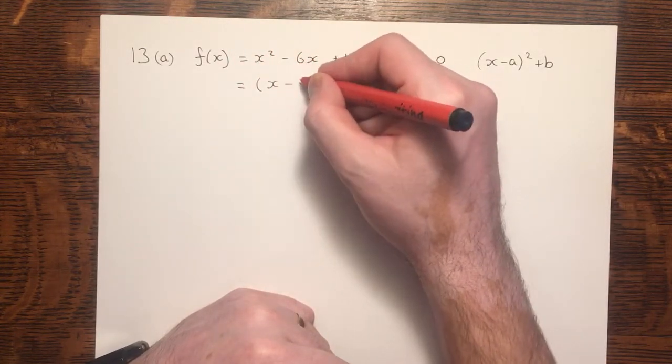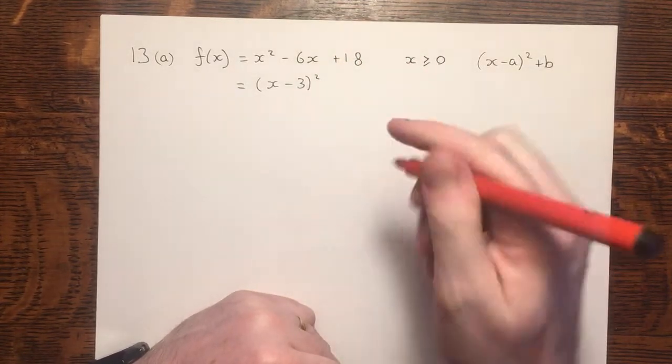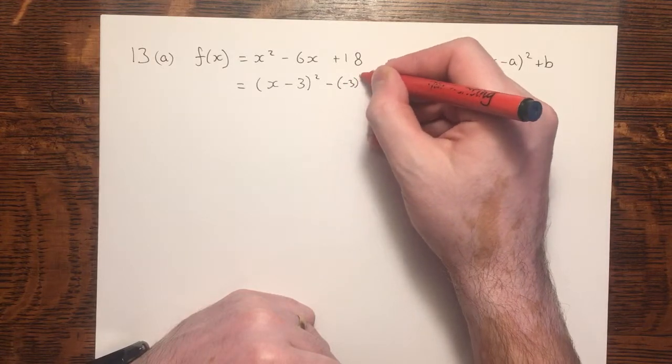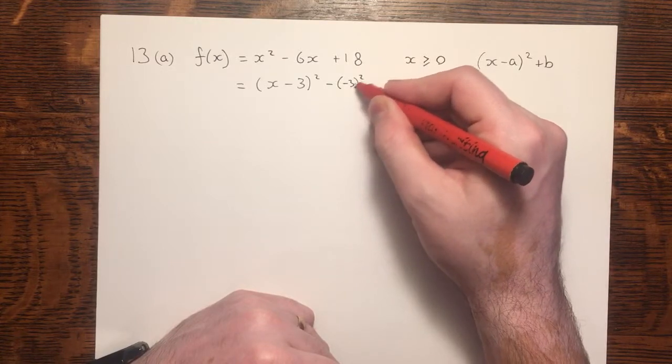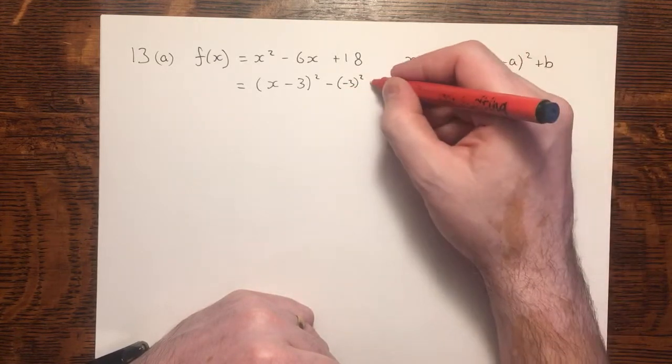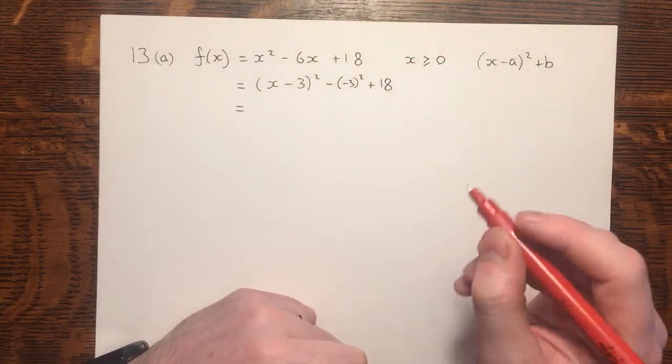Completing the square, we need to half the linear coefficient and put that inside the brackets with the square. But then we have to subtract the square of this. The brackets are important, because if you don't have the brackets, you'll square the 3 before you subtract it, rather than doing minus 3 times minus 3. We've still got the 18,